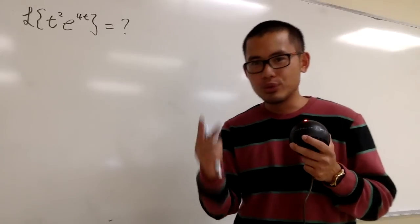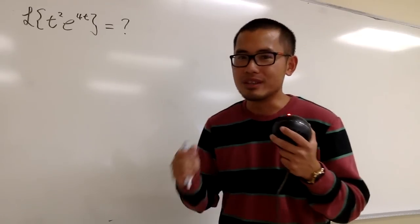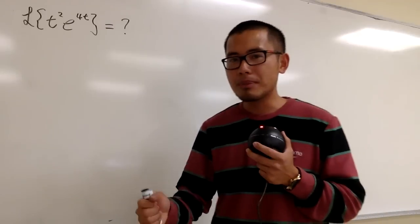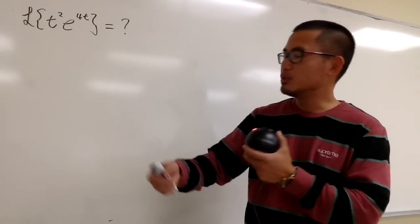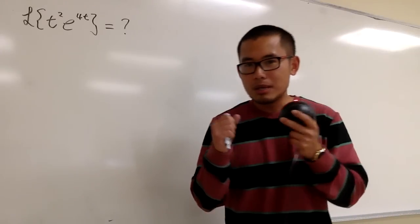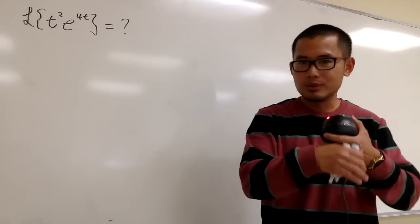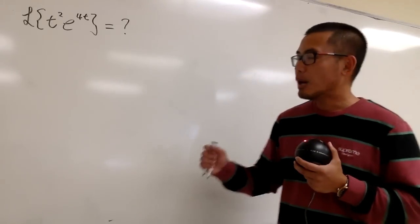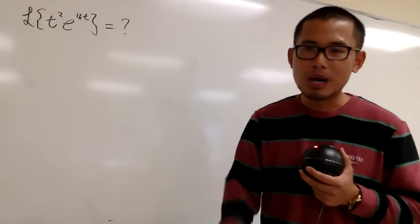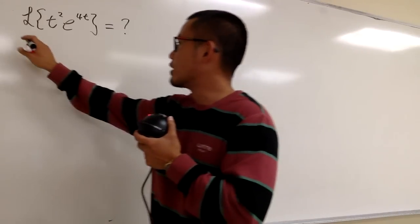And we are lucky because we have two really nice properties on how we can take care of multiplying by a function with t to some power, and the other one is multiplying a function by e to at. All right, I will show you guys how to utilize those two properties, and I will show you guys the harder way first.